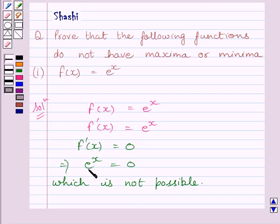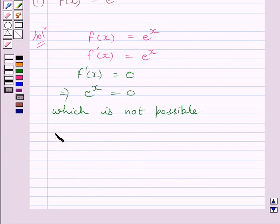We know value of e is greater than 1 and for any value of x, either positive or negative or 0, e will not tend to 0. So, we get f(x) is equal to e raised to the power x does not have maxima or minima.